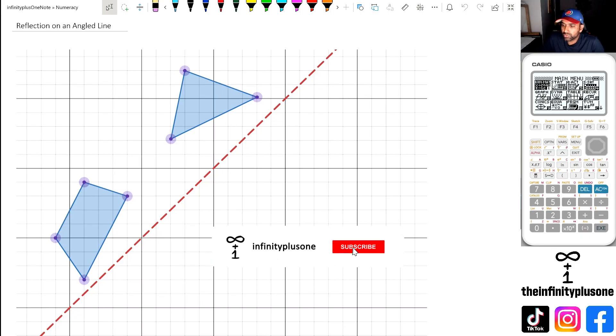Okay, so in the last two videos, we would have actually seen a reflection on the x-axis and the y-axis. Now with this angled line, it gets a little bit more trickier.